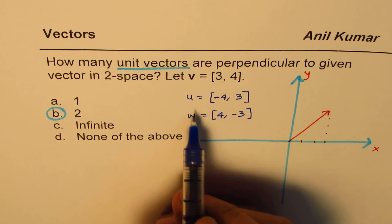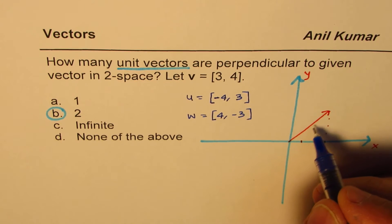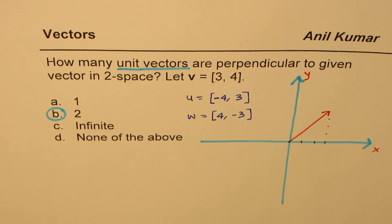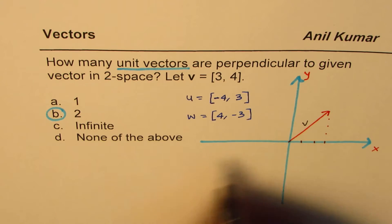Now, these are not unit vectors. Why are they not unit vectors? This vector which we are talking about is v. So what is the magnitude of v?